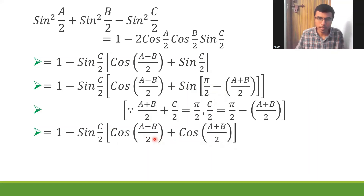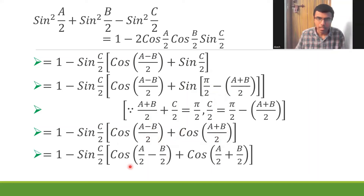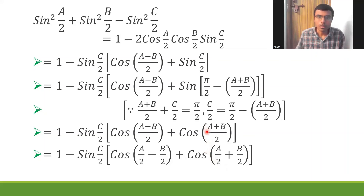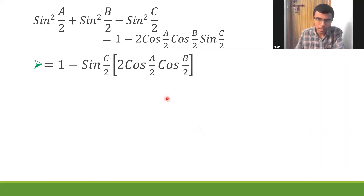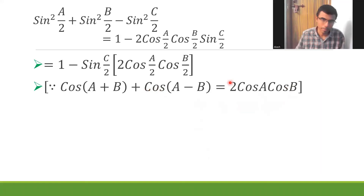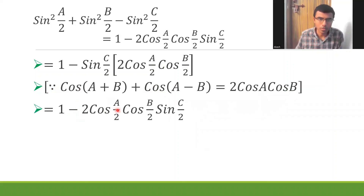Now I'll split and apply the formula: cos(A-B) + cos(A+B) = 2·cosA·cosB, with A = a/2 and B = b/2. This gives 2·cos(a/2)·cos(b/2). Hence the expression becomes 1 - 2·cos(a/2)·cos(b/2)·sin(c/2), which with a little rearrangement gives 1 - 2·cos(a/2)·cos(b/2)·sin(c/2). That's our result.